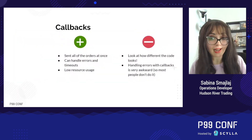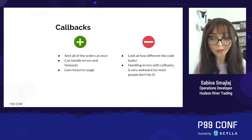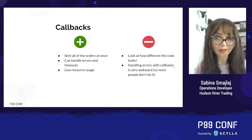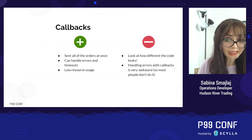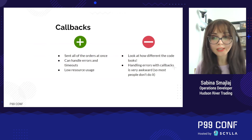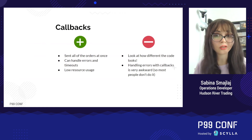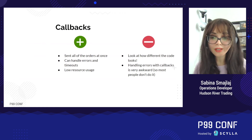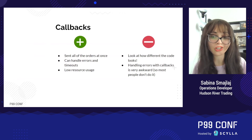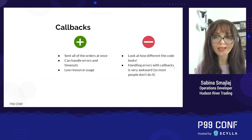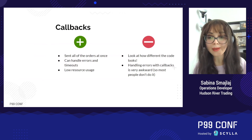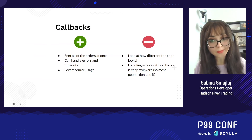So how did callbacks stack up? On the plus side, we are able to send all of the orders at once. We can handle errors and timeouts, though we can't specifically set the timeout. And compared to threads, we don't need as much memory and we don't have to wonder if our API or our language is thread safe, since there's only one thread. However, the code is not very straightforward and requires changing our API. The callbacks come out of nowhere and we can't reason about what order things are happening in by reading the code top to bottom. It's also much harder to handle errors with callbacks compared to exceptions.